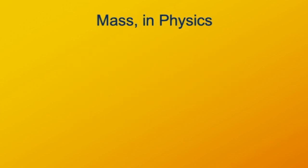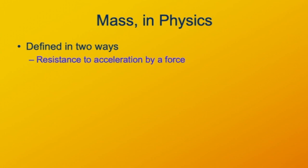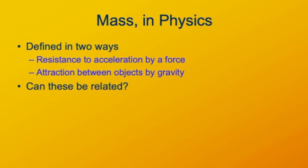It turns out that in physics we have two different ways to think of mass: how difficult it is to accelerate an object, and how strongly an object interacts with a gravitational field. These seem like two different things, but as closely as we can check, they are always exactly equal to each other. Physicists are very suspicious of coincidences like this, and sure enough, Einstein's general theory of relativity tells us they are, in fact, the same thing. But that tells us some shocking things about the structure of the universe, which are regrettably beyond the scope of this course.